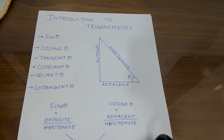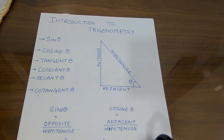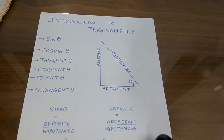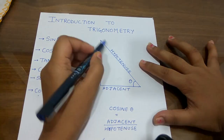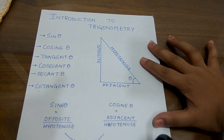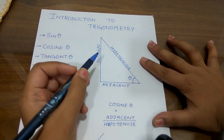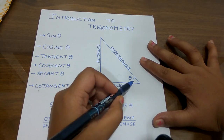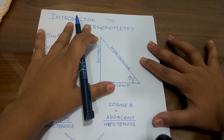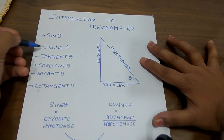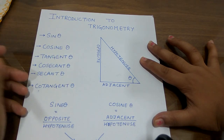Hello students, the topic we are doing today is the introduction to trigonometry. It is a Class 10 topic — Chapter 8 in the NCERT book. Trigonometry is basically the study of right angle triangles. There are some trigonometric ratios that help us identify the relationship between the angles and the sides. Since it is the introduction, you have to know there are six different trigonometric ratios, and we will study all of them one by one.